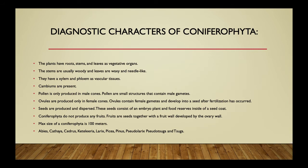Pollen is produced in male cones and contains male gametes. Ovules are produced in female cones and contain female gametes, developing into seeds after fertilization. Seeds are dispersed through different agents and consist of an embryo and food reserve materials inside a seed coat. Coniferophyta do not produce fruits; the seeds lack a fruit coat, and a single layer develops from the ovary wall around the seed coat.